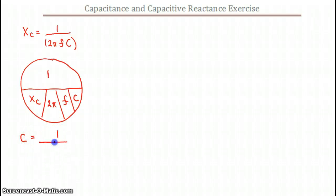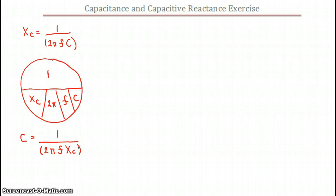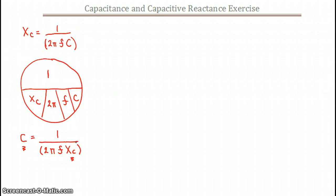So that rearranged equation is 1 over 2 times pi times frequency times XC. You'll notice that on both of those equations I've put brackets around there — it just makes it a little bit easier, otherwise you're going to do 1 divided by 2 and then multiply by the rest of the values on the denominator. So you can see that XC and C just change spots in each of those equations.